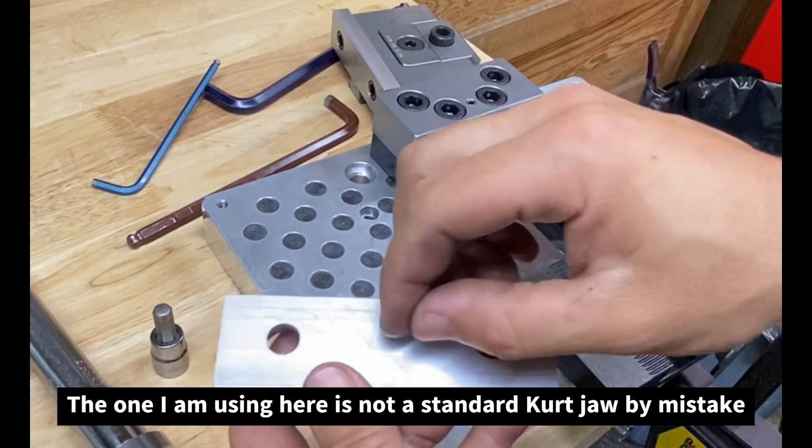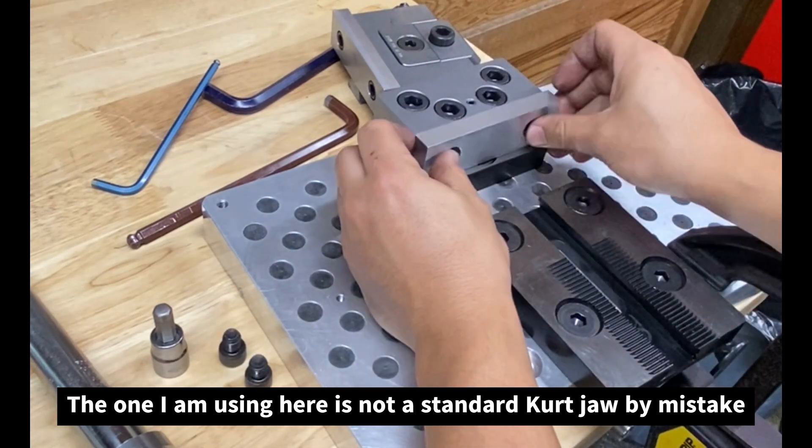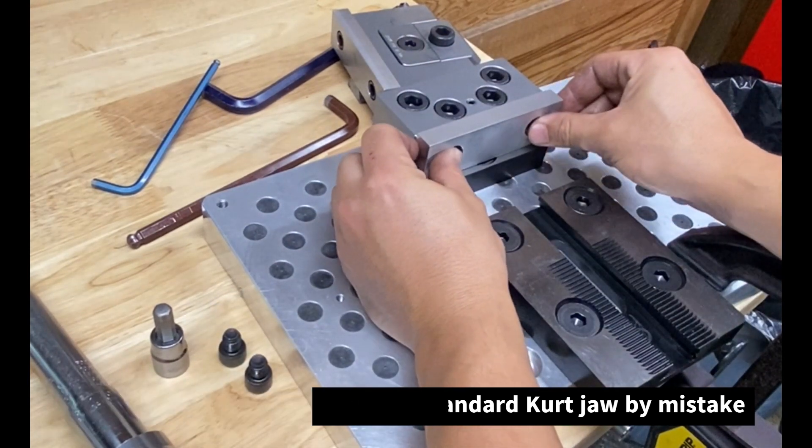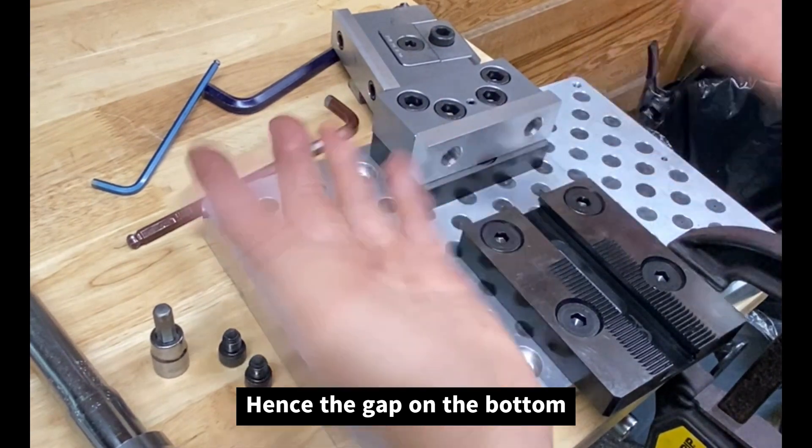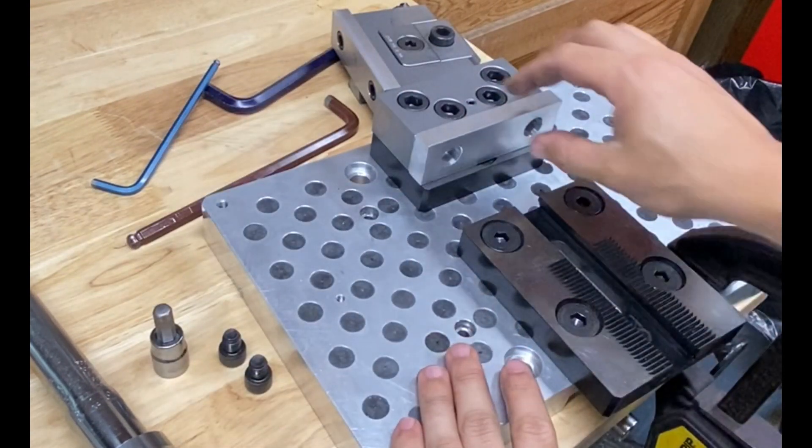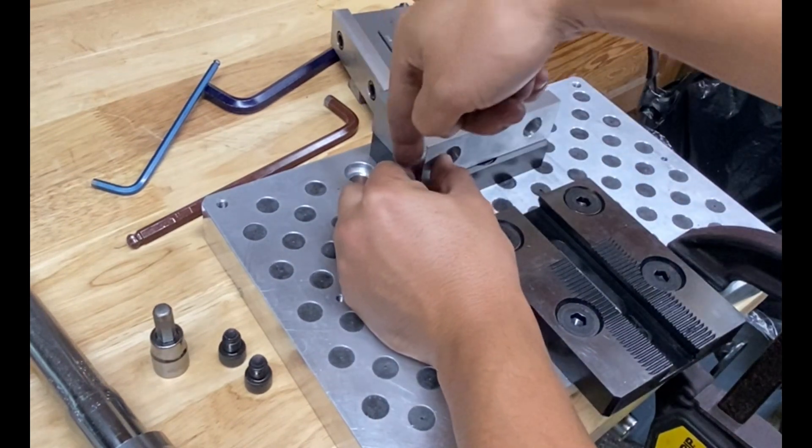Some people might look and be like, well that doesn't fit standard crit jaws. The reason why I put this here is if you wanted to put a dowel pin in your jaw, you could have it so that it repeatably locates in an x.